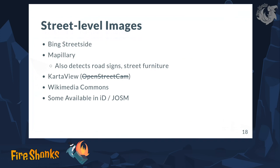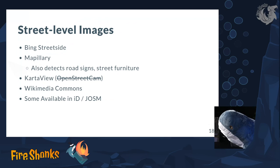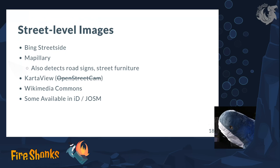When editing, street-level images might be very helpful. Some are available in iD or JOSM — for example, Bing Streetside or Mapillary, which is very similar to Google Street View but is often more up-to-date, sometimes has a lot more coverage, and in some countries is really a lot better. There's also Kartaview, which used to be called OpenStreetCam, and Wikimedia Commons where photos for Wikipedia are uploaded. Importantly, you can upload to these services. If you go out mapping and take some photos, please do it — it's extremely helpful when other mappers have already uploaded photos of an area.